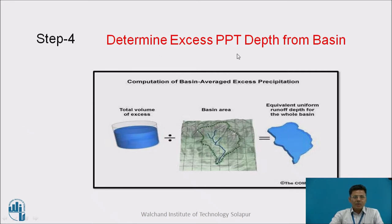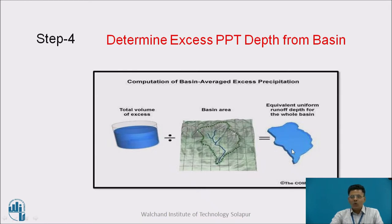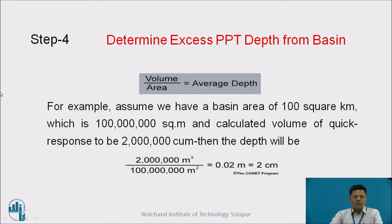Step 4: Determine the excess precipitation depth for the basin. We take the total volume of quick response runoff that we calculated and divide it by the basin area. This gives us the equivalent runoff depth averaged over the entire basin. The simple formula is: depth equals volume divided by area.